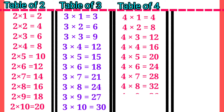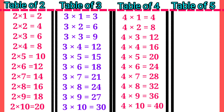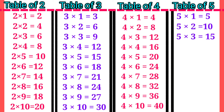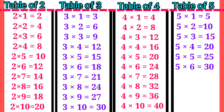4×8=32, 4×9=36, 4×10=40. Table of 5: 5×1=5, 5×2=10, 5×3=15, 5×4=20, 5×5=25.